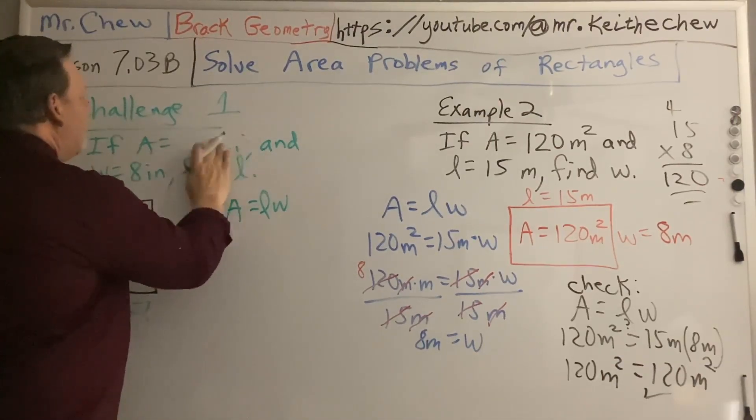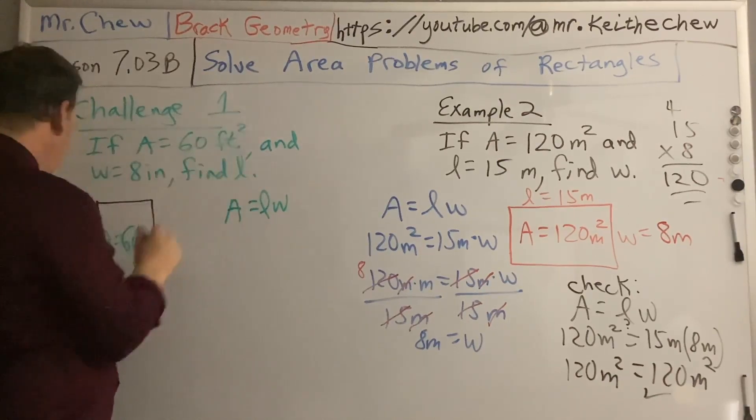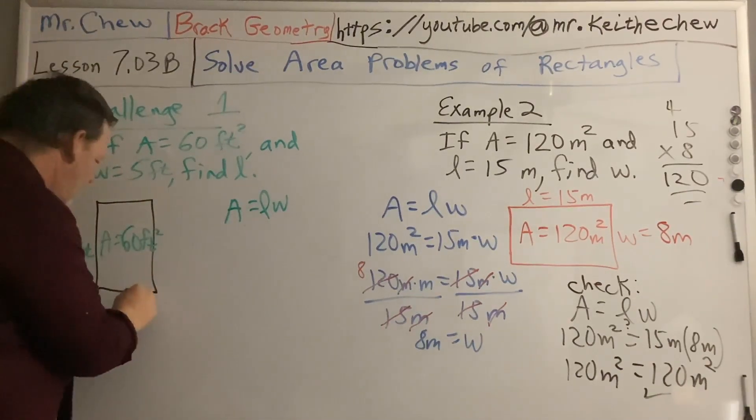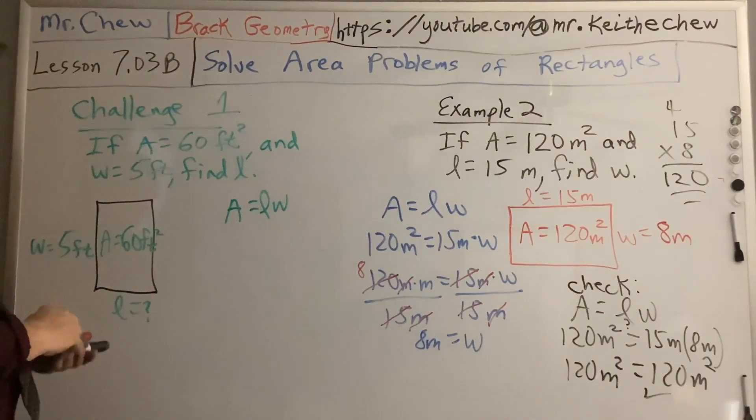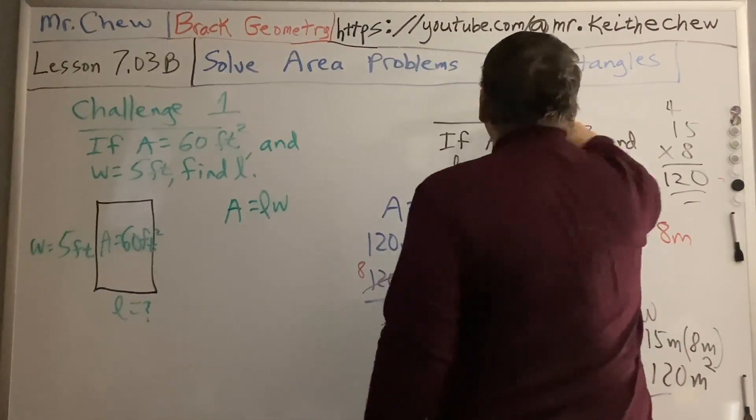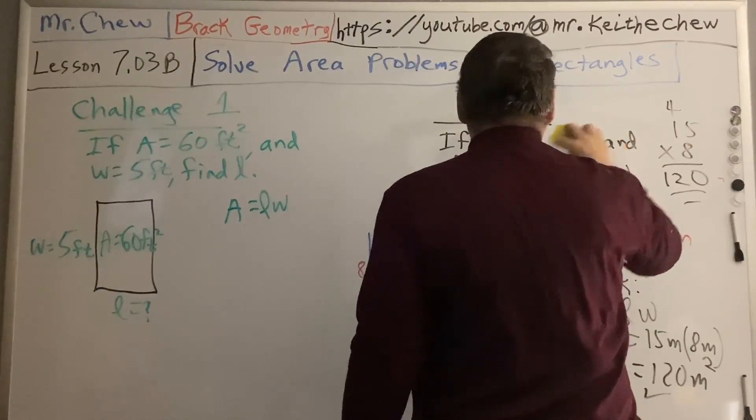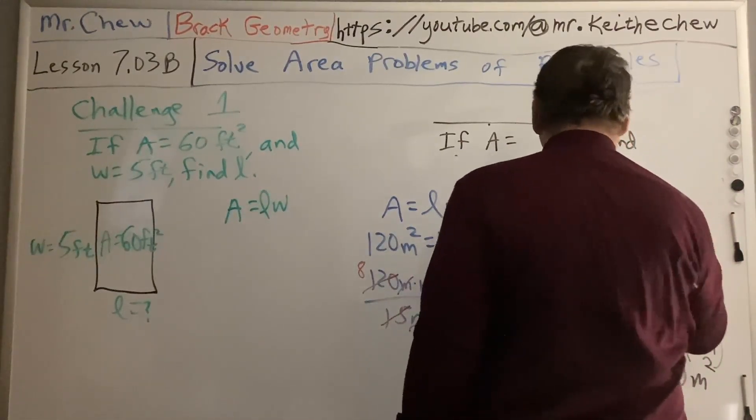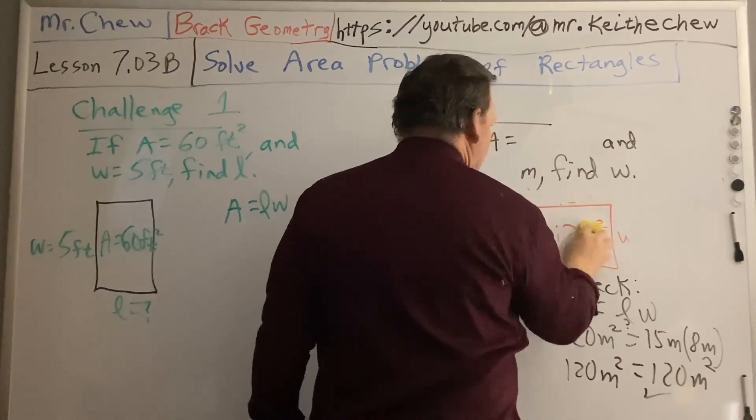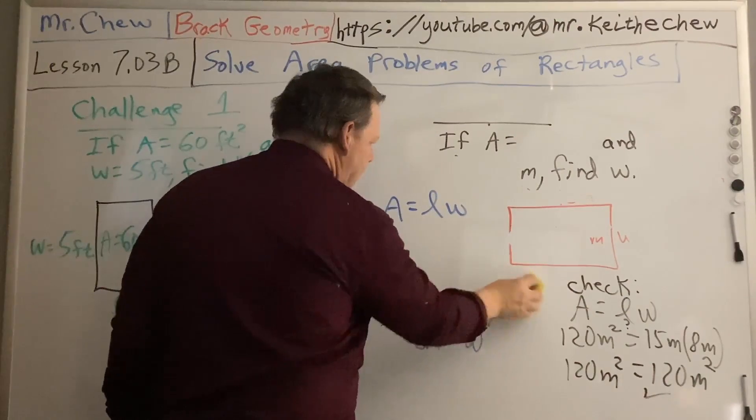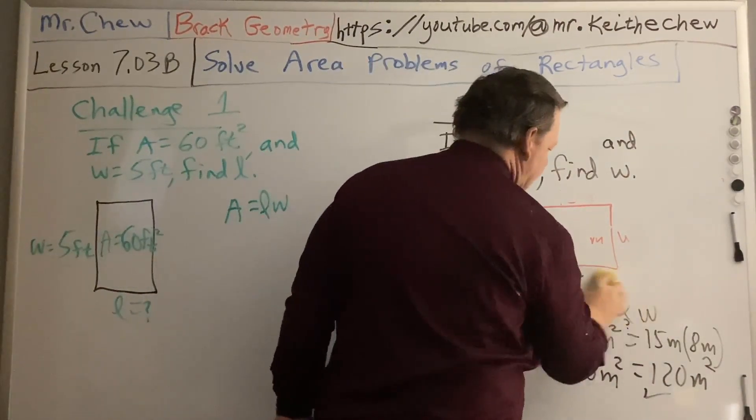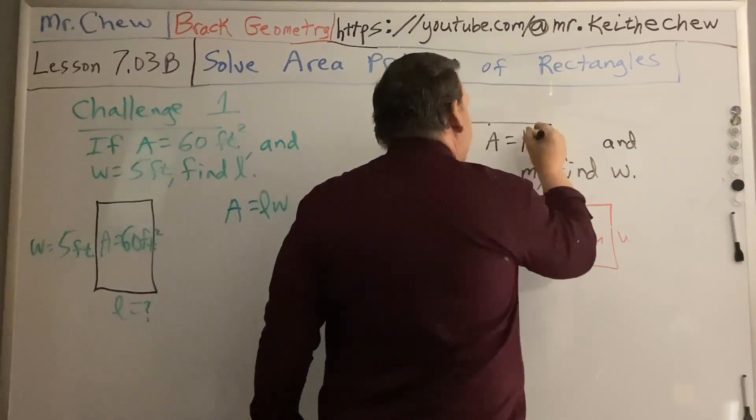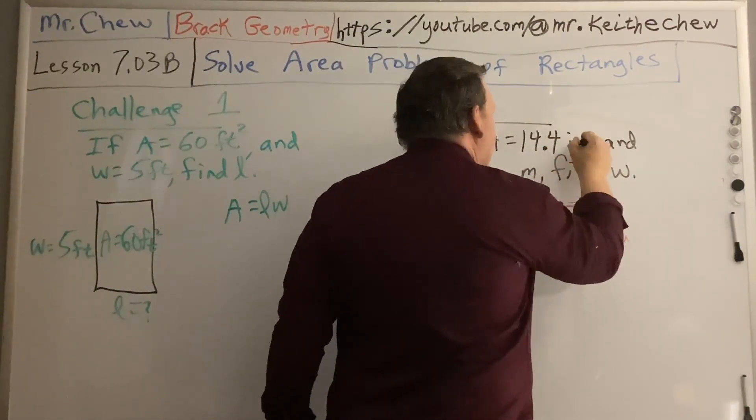And there's your formula. So we've got 60 feet squared. The width is 5 feet. So solve for the length, and then check it. Okay, we'll put challenge two over here. We'll still use this same formula. And you'll still check it.